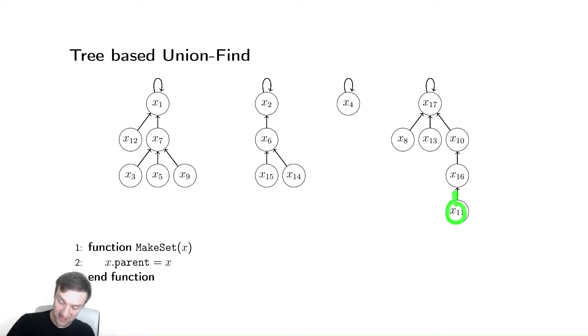Similarly, x11 goes to x16, goes to x10, goes to x17, returns x17. So seems like a very logical way to do this. The question now becomes, how are we going to combine these? Notice, these sets are not binary trees. They have a variable number of children.